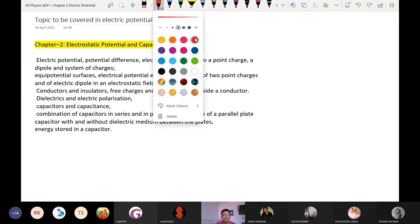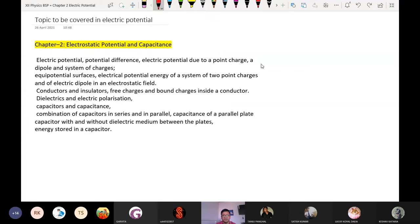Electric potential due to a point charge. This is the concept which we are discussing under the heading V is equal to KQ upon R.